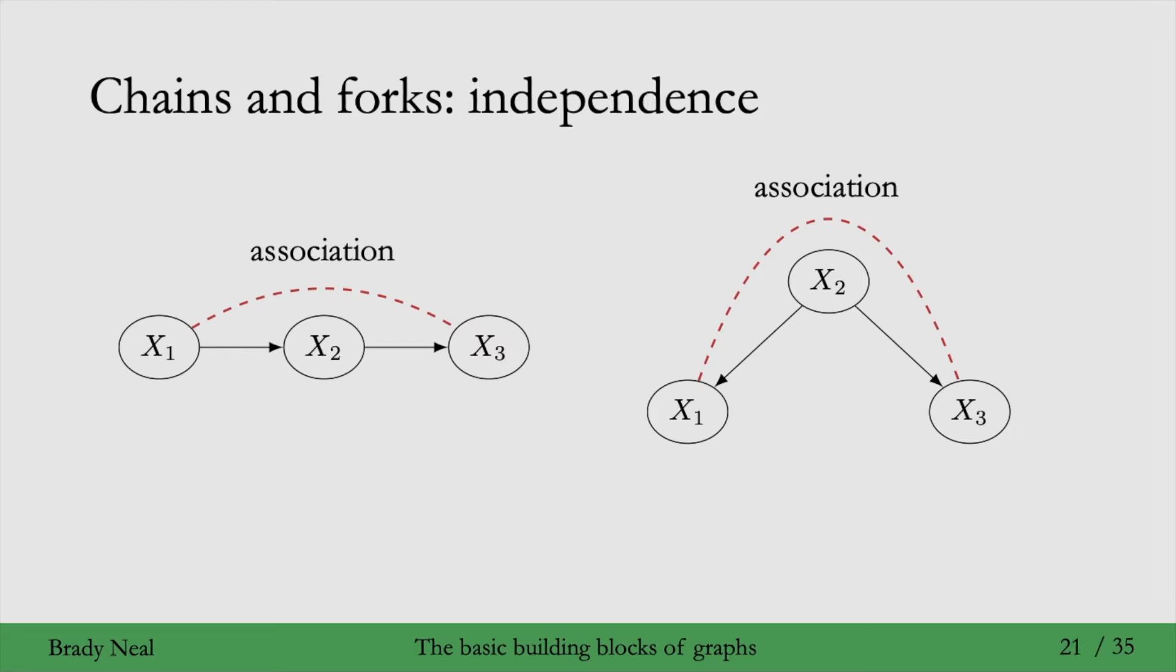And we'll now talk about independence in chains and forks. So it turns out that if we were to condition on x2, then x1 and x3 become independent, conditional on x2. We depict this conditioning with a light gray shading of the variable x2 here in the chain graph. So you can think of conditioning on x2 in this chain as blocking this path from x1 to x3.